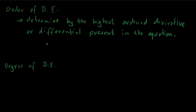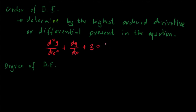For example, if we have d²y/dx² plus dy/dx plus 3 is equal to 7y, the order of this differential equation is second order, because the highest order derivative present is the second order derivative — that term is the highest, so our differential equation is in the second order.